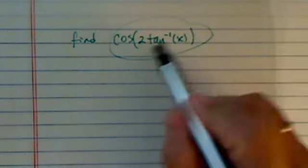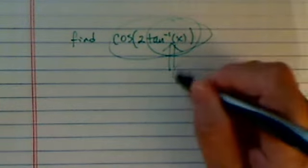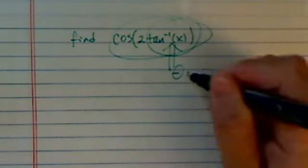We're supposed to find cosine of 2 tangent inverse. I always tell my students, when you see tangent inverse or any inverse function, the trick is this: This has to be an angle.